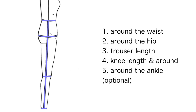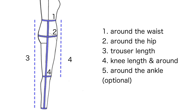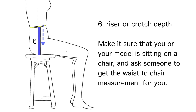These are the required measurements for the trouser pattern — please record them on a piece of paper for reference. Number one: around the waist, get the smallest part. Number two: around the hip, get the largest part. Number three: trouser or pant length, from waist to ankle or floor. Number four: knee — the circumference around the knee and the distance from waist to knee. Number five: around the ankle, the circumference (optional). Number six: riser or crotch depth — have your model sit on a chair with a straight body and measure from the waist to the chair.